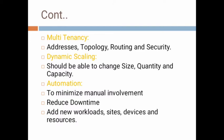Next, dynamic scaling: it creates target tracking and adjusts resource capacity in response to live changes in resource utilization. It should be able to change the size, quality and capacity. Next, automation: automation is the creation and application of technologies used to improve efficiency, to minimize manual involvement because automation is done by commands. Reduce downtime — when new equipment arrives, we have to hold that process and equip all the devices, which takes lots of time, so that is reduced here. And we can add new workloads, sites, devices and resources. That is why we need SDN for all networking areas.